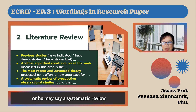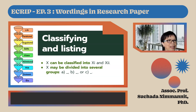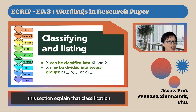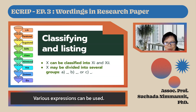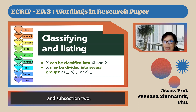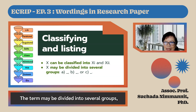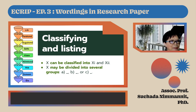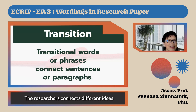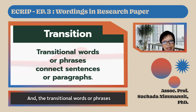He may also say: 'A systematic review of prospective observational studies found that…' Qualifying and listing: this section explains the classification or grouping of terms and concepts. Various expressions can be used, such as: 'The term can be classified into subsection 1 and subsection 2', or 'The term may be divided into several groups, such as Group A, Group B, or Group C.' The researcher connects different ideas using transitional words, which help connect sentences or paragraphs together.